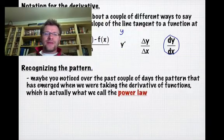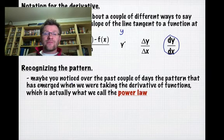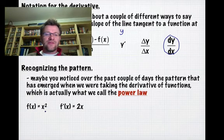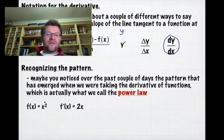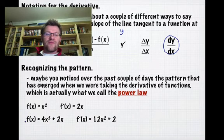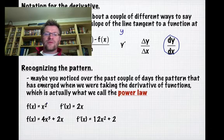Let's recognize the pattern. Maybe you noticed over the past couple days that a pattern has emerged when taking derivatives of functions—this is the power law. The first example we did yesterday started with f(x) = x². We took the derivative and got 2x using the limit definition, which took a long time. Our second one was f(x) = 4x³ + 2x, and the derivative was 12x² + 2. The pattern is: take the exponent, put it down in front, and subtract 1 from it.